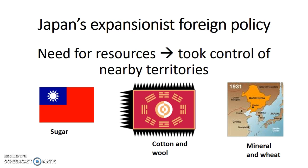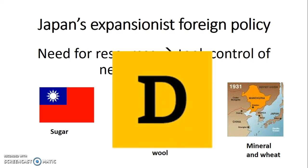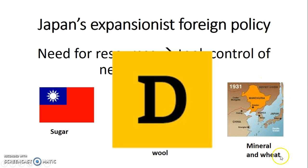Japan's expansionist foreign policy was driven by the need for more resources, so they took control of nearby territories. They went to Taiwan for sugar, to Choson (Korea) for cotton and wool, and took over Manchuria for mineral and wheat. At the same time, it was also a strategic move for defense — by getting more land they were protecting themselves. As you can see in this image, Manchuria and Korea are very strategic locations for territorial expansion, and it would be difficult for other countries to reach Japan without access to countries such as Korea.